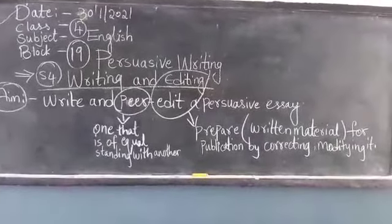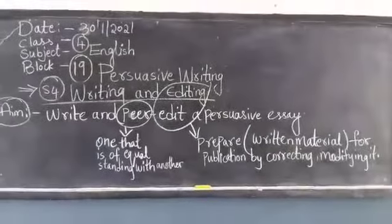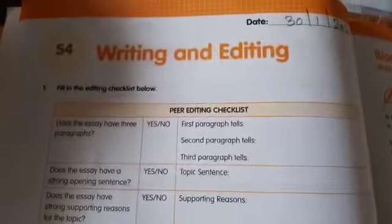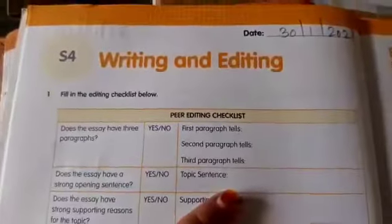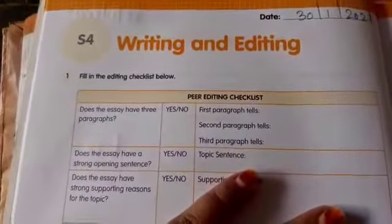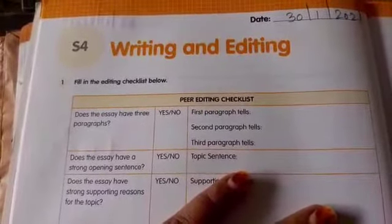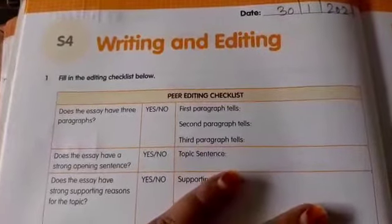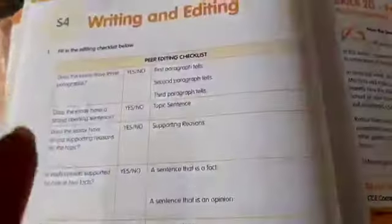Well, writing an essay is the aim for today. S4 writing and editing aim: write and pre-edit a persuasive essay. When you are writing an essay, what should you do? Let us see the points in the workbook. See here — this is your workbook, page number 18. S4 writing and editing. Write today's date: 30-1-2021. Fill in the editing checklist below. Editing means you are writing, modifying, or correcting it.